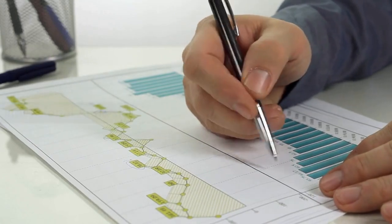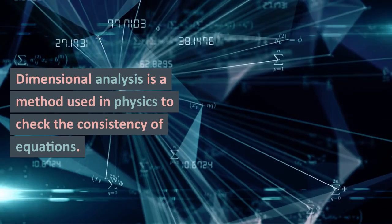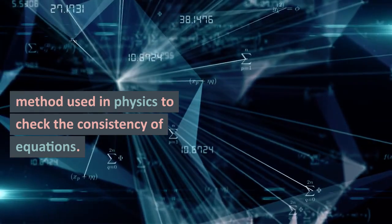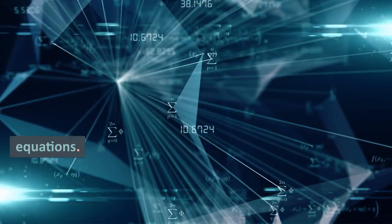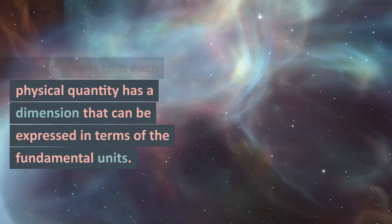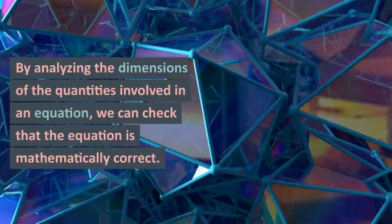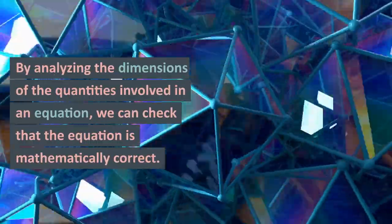Dimensional Analysis. Now, let's move on to dimensional analysis. Dimensional analysis is a method used in physics to check the consistency of equations. The basic idea is that each physical quantity has a dimension that can be expressed in terms of the fundamental units. By analyzing the dimensions of the quantities involved in an equation, we can check that the equation is mathematically correct.